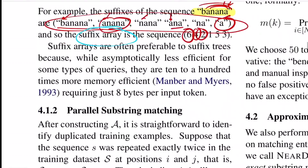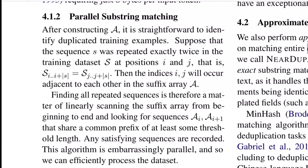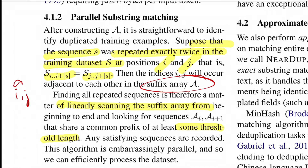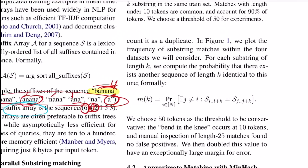Once the suffix array is created, you search for duplicates. If a sequence s repeats twice at positions i and j in the training data, you can do a quick lookup in the suffix array and find positions i and j adjacent to each other, because the array is lexicographically sorted. A linear scan over this array retrieves the duplicates. You can add a threshold — in this paper, the substring threshold is set to 50 tokens — so only substrings of at least that length are considered duplicates.